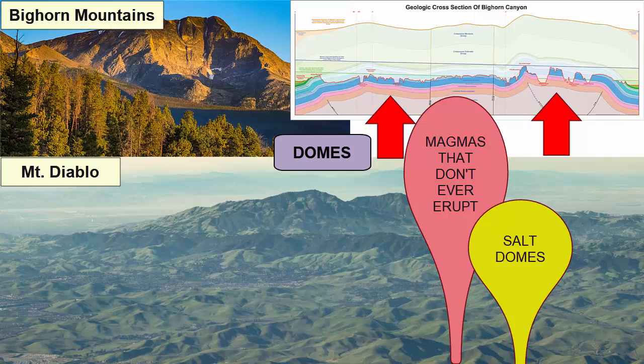Some domes form above buried salt beds that have mixed with water and formed upward-migrating salt mounds. Some domes have cores of serpentinite, which forms when mantle rock at seafloor spreading centers mixes with hot water. The lower density of the serpentinite makes it migrate upward along cracks in the seafloor, up subduction zones, and if no cracks exist, push upward into domes.